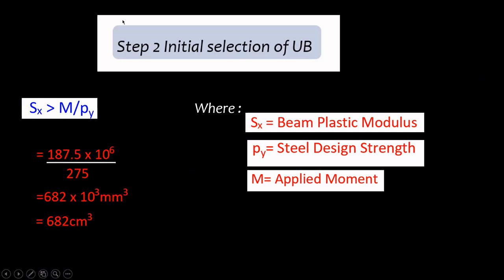To do that, you use something called the beam plastic section modulus, and the SX of the beam will give us a rough idea on the best beam to select. So the beam section modulus is given by M divided by PY, where M is the applied moment, PY is the steel design strength, and SX of course is the beam plastic section modulus.